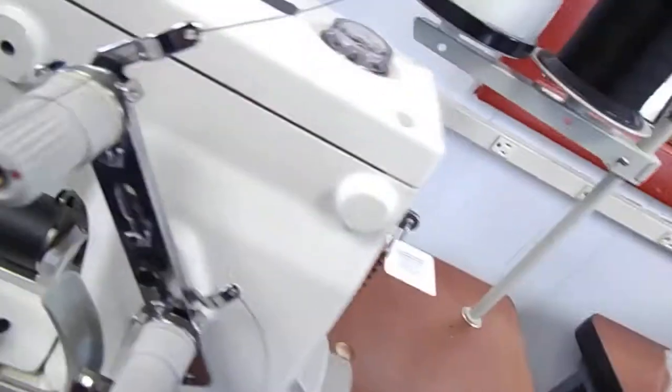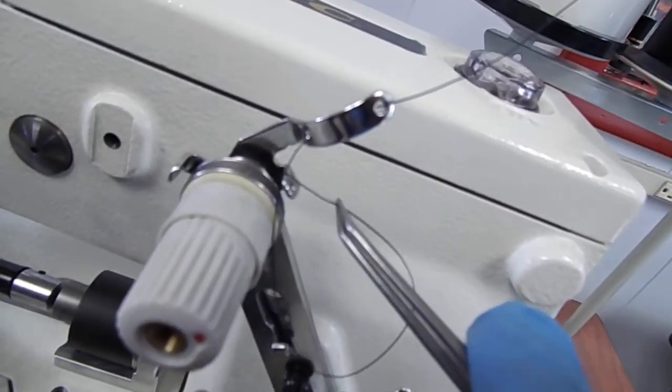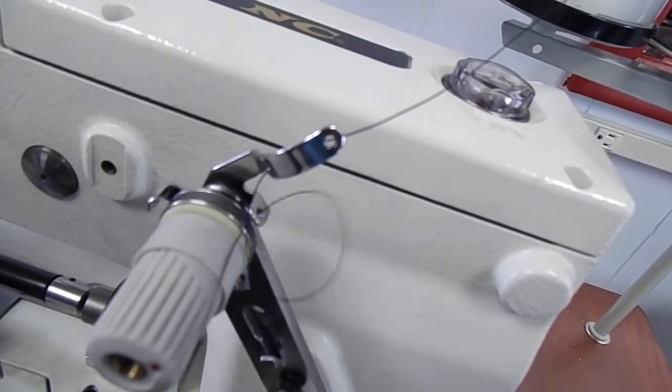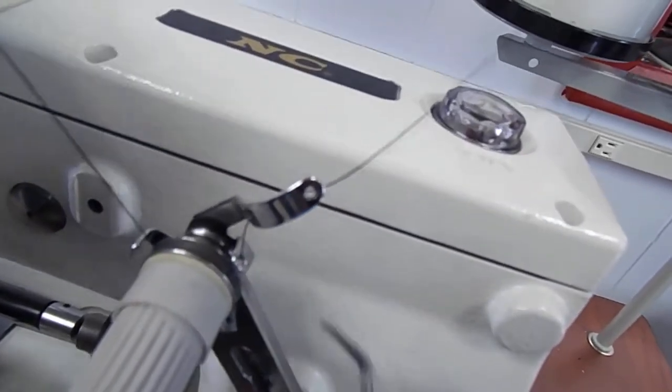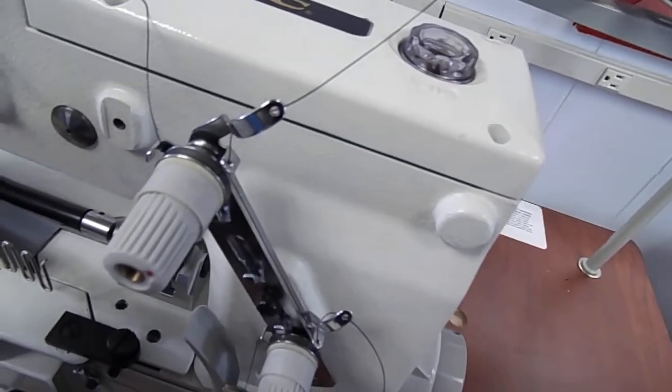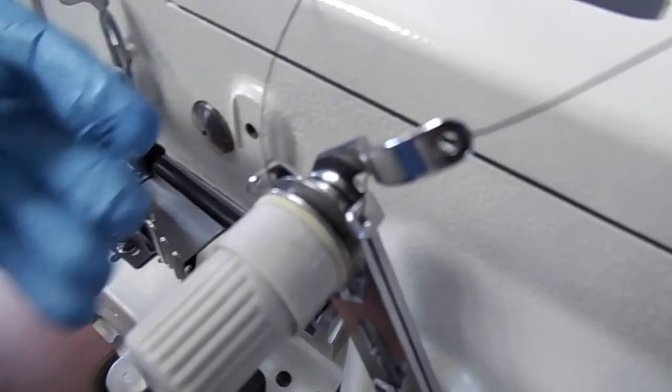So that first hole goes in, goes to the back of it, then out. It goes in here, down through there, between the tension discs. Make sure it's between the discs. Between the discs and pull up from the bottom up. Then back out the other eyelet. Exactly.